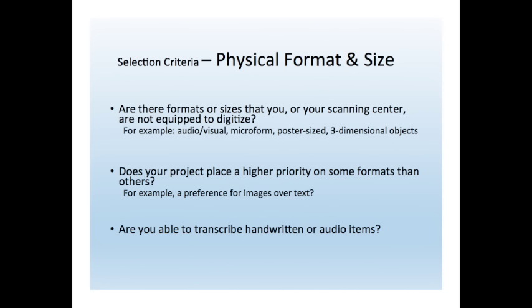Your project might place a higher priority on one format over another based on the objectives and intent of your project scope. For example, if your project has a storytelling objective and you want to create online exhibitions, you'd rather have more images than text. There are also practical elements — if you have materials that are handwritten, there are issues around transcribing that. Handwritten objects digitized can't be processed with OCR — optical character recognition — so they are not keyword searchable unless you add a transcription. The extra time and expense of transcribing handwritten diaries, letters, postcards, or ledgers is a pretty important piece to factor in.